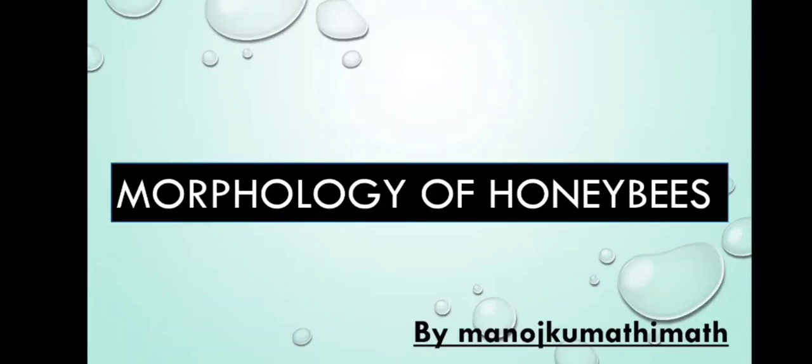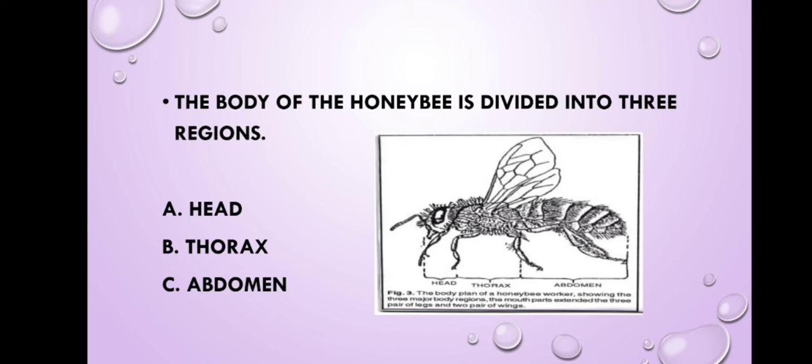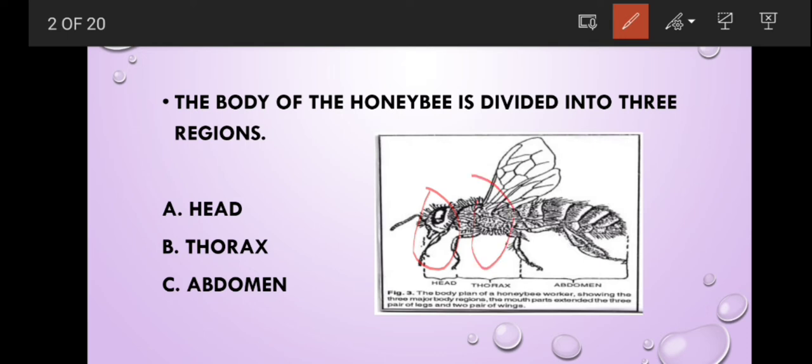Hello friends, good evening to everyone. My topic is about morphology of honeybees. The honeybee body is divided into three regions: head, thorax, and abdomen.